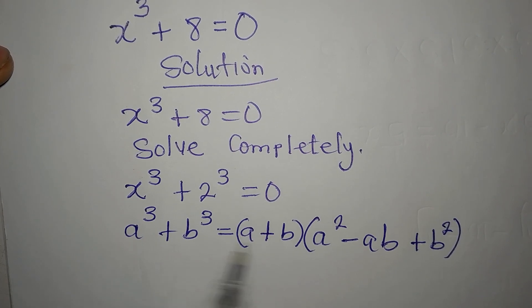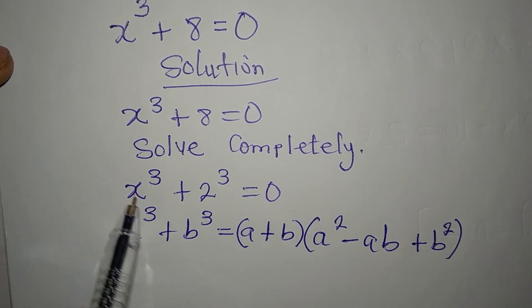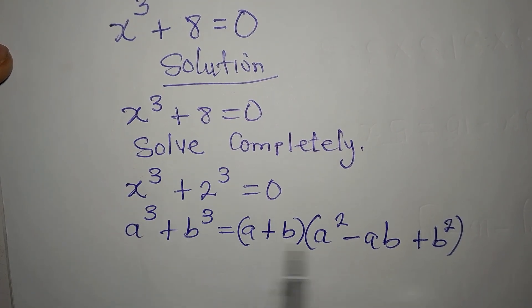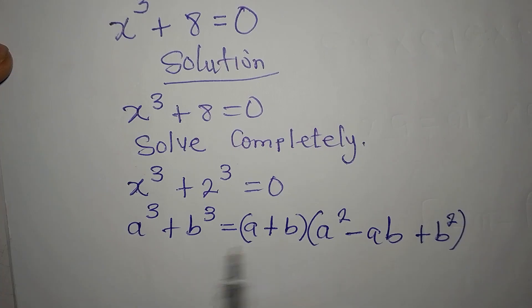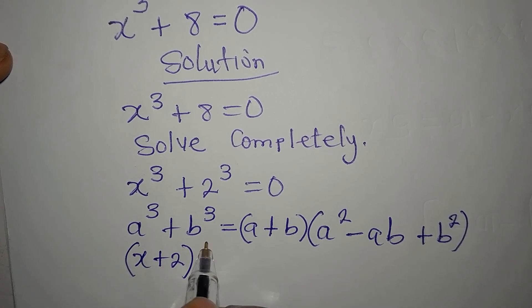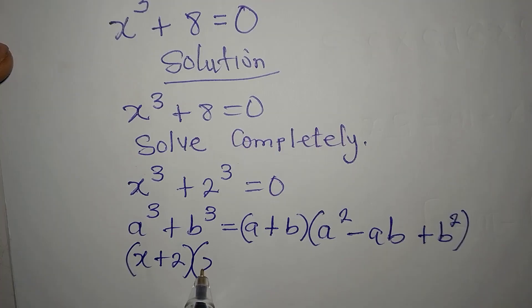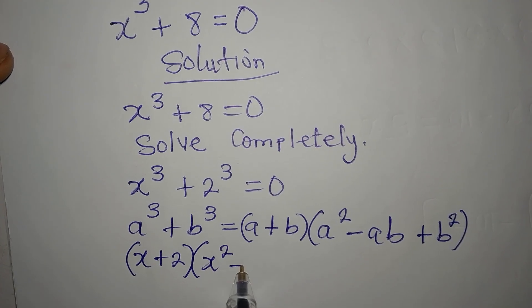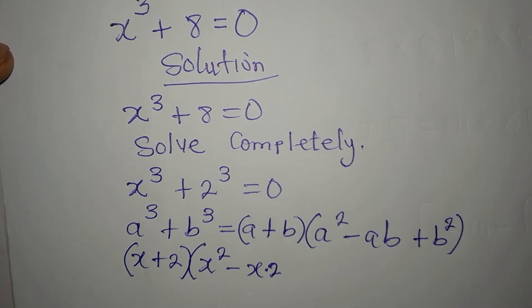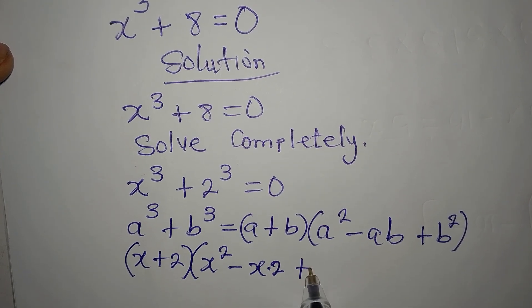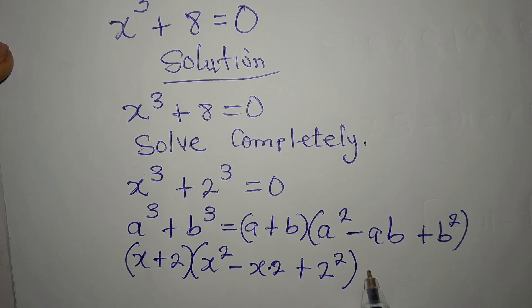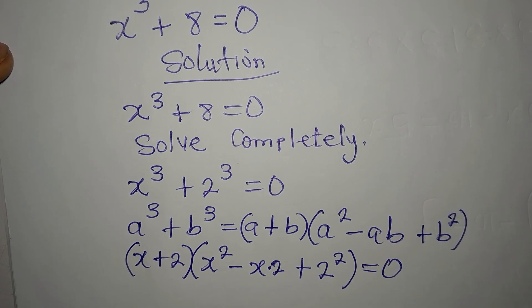Now from here, our a is x, b is 2. So let's substitute all of this into this. A plus b will now be x plus 2, into a squared is going to be x squared minus ab is going to be x times 2. This is x times 2. Then plus b squared is going to be 2 squared. And then we equate everything to 0.